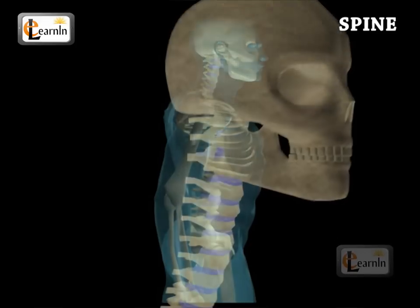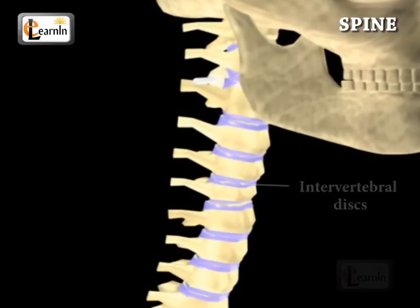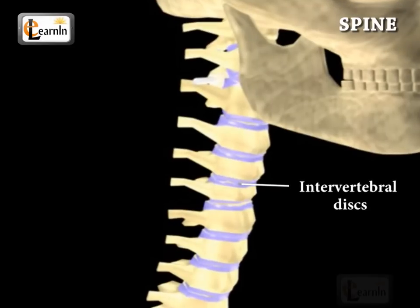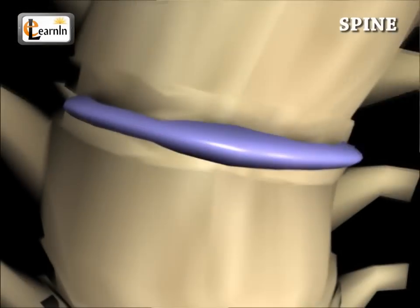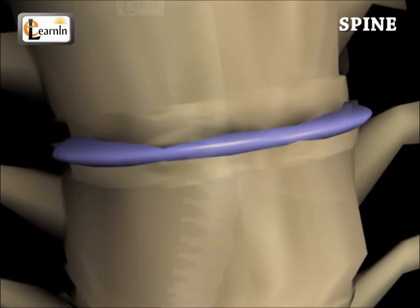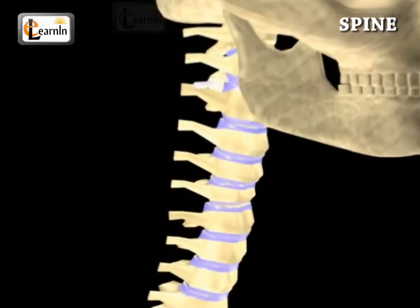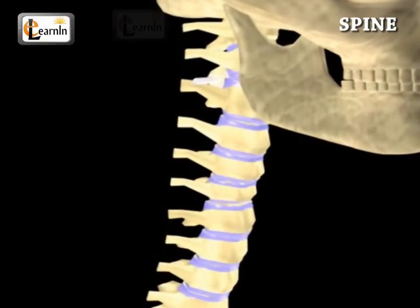Each of the vertebrae is supported by a fibrous disc, known as the intervertebral discs, that act like cushions between the bones. The body of the vertebrae provides a resting place for these fibrous discs.